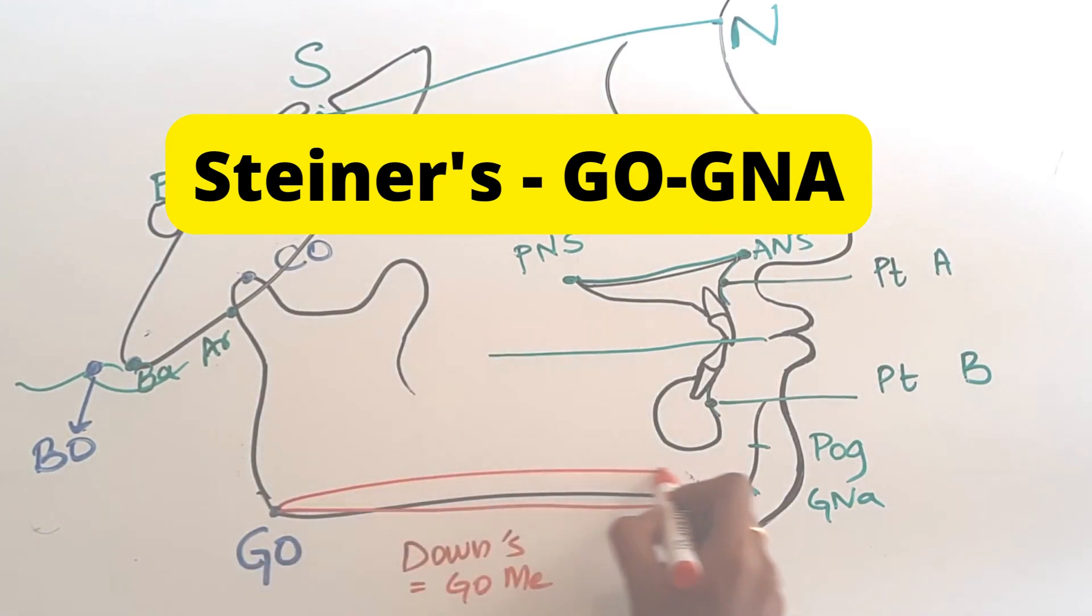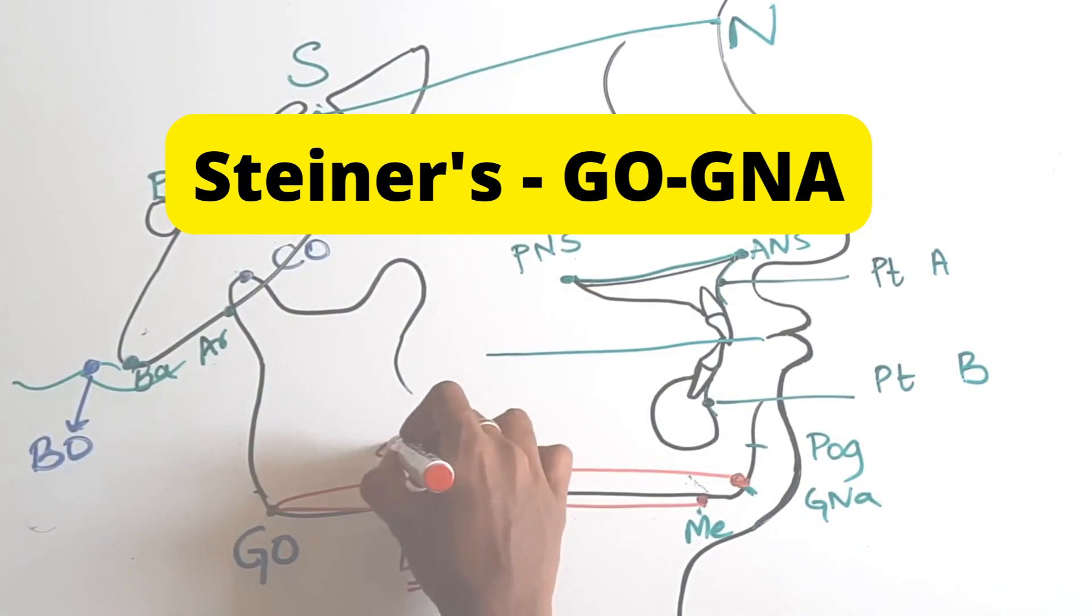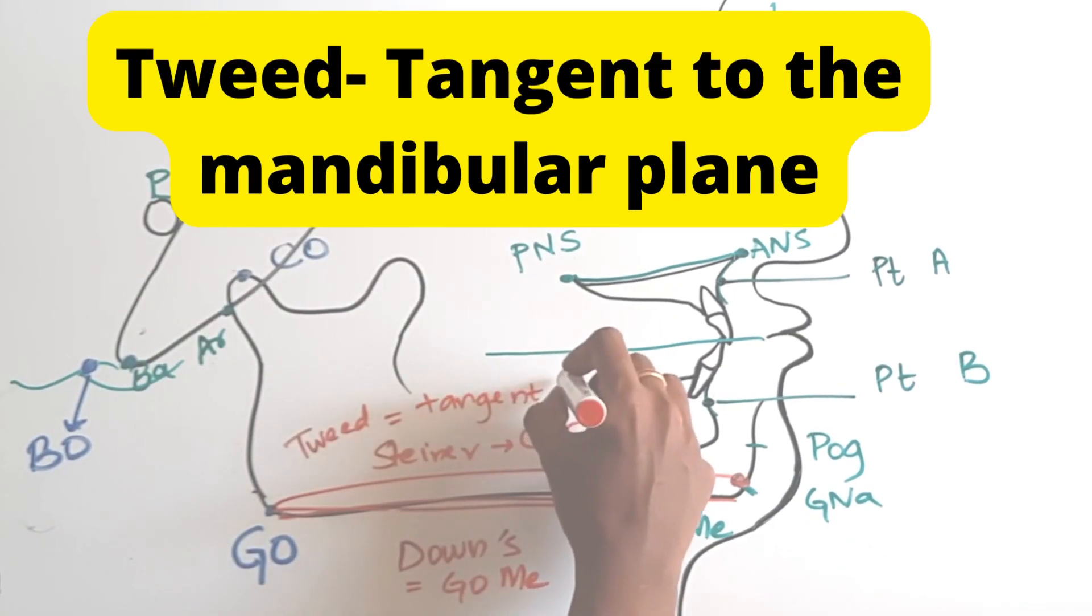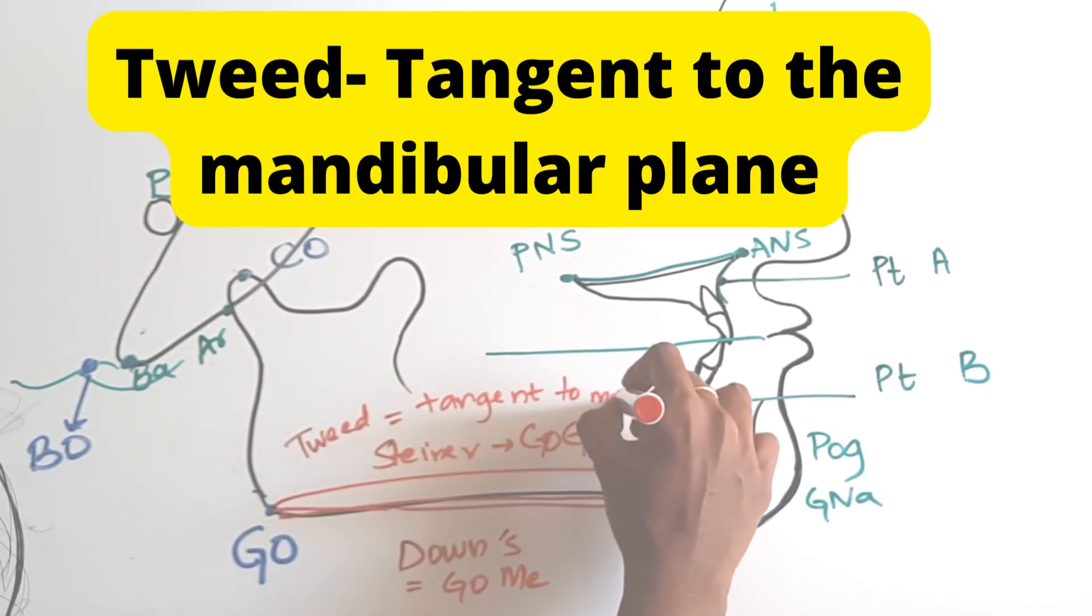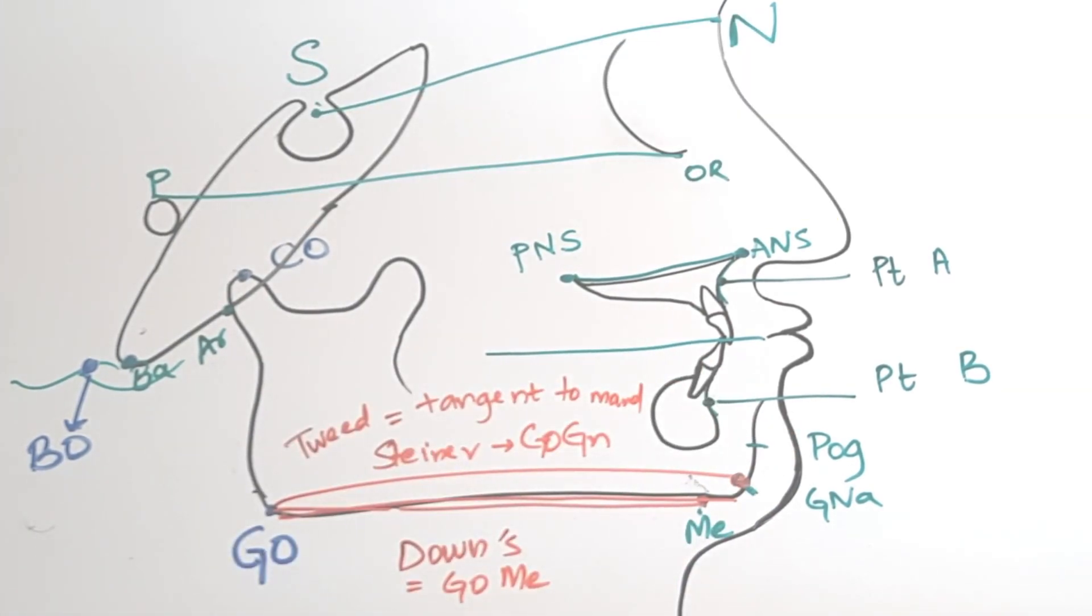For Steiner's, it is gonion gnathion, so it's GO-GNA. And for Tweed, he just kept it simple, so he decided to go with tangents to the mandibular plane.